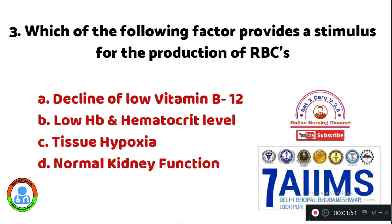Question 3: Which of the following factors provides a stimulus for the production of RBCs? Option A: decline of low vitamin B12. Option B: low hemoglobin and hematocrit level. Option C: tissue hypoxia. Option D: normal kidney function. The factor which stimulates the production of RBCs is Option C, tissue hypoxia.